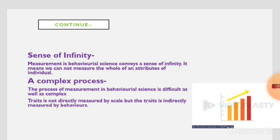The last point is that measurement is a complex process. Measurement is a complex and difficult process in behavioral science. Traits are not directly measured by scale, but traits are indirectly measured by behavior. If we observe change in behavior, we can measure it — because measurement is done according to the kind of learning that has occurred.